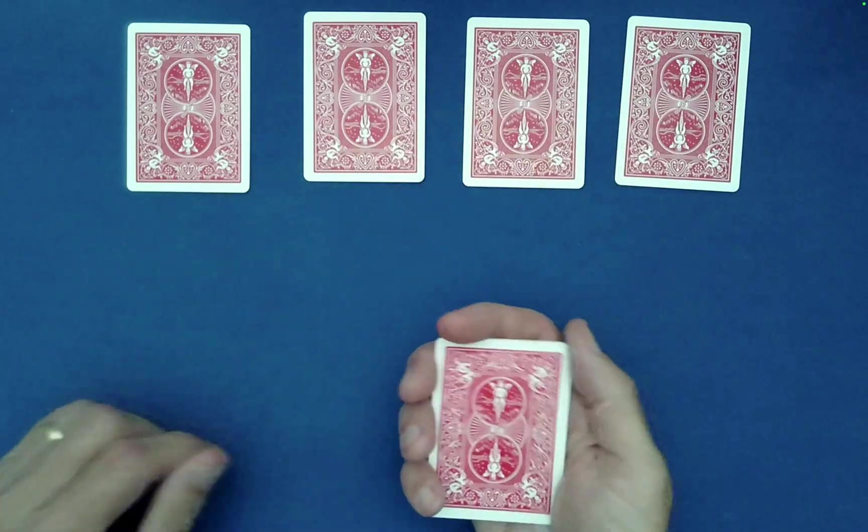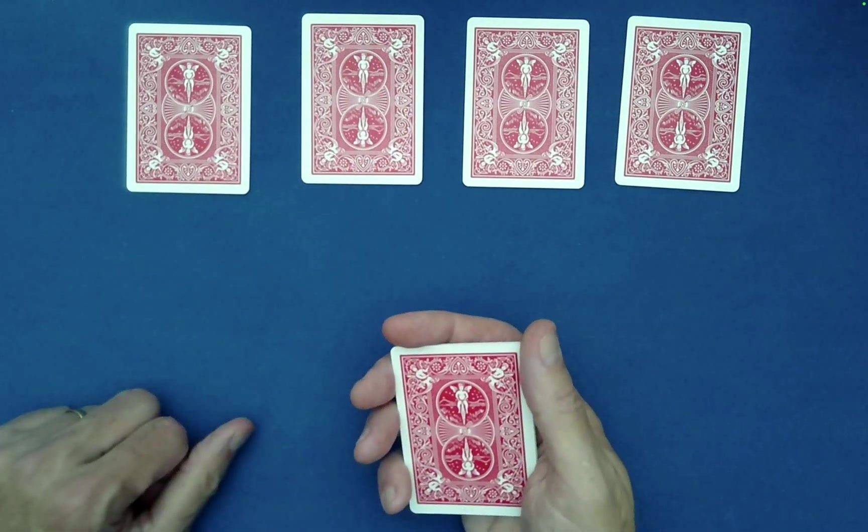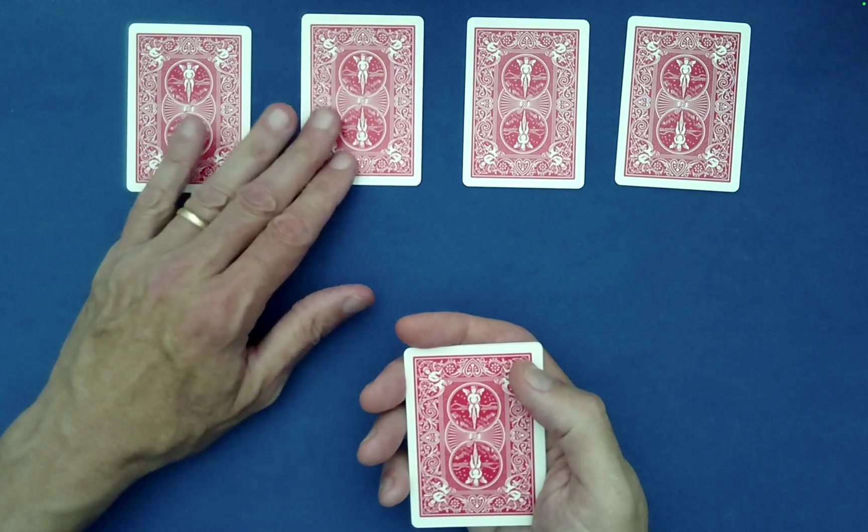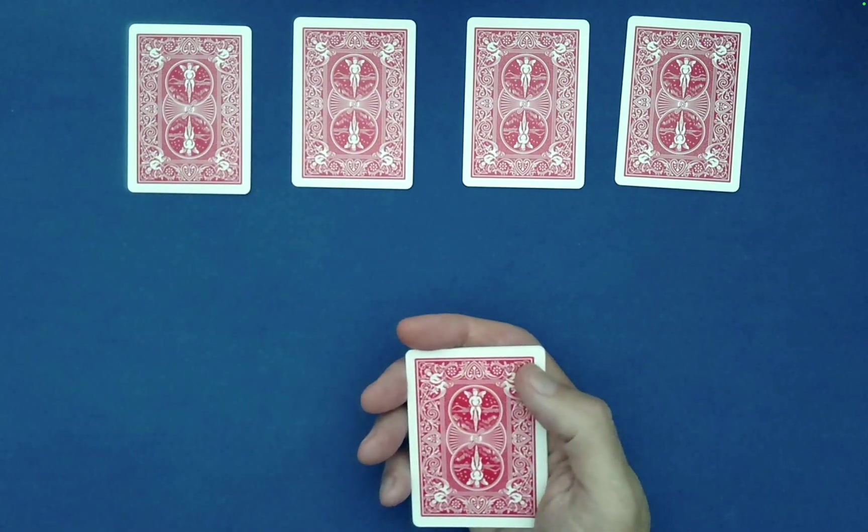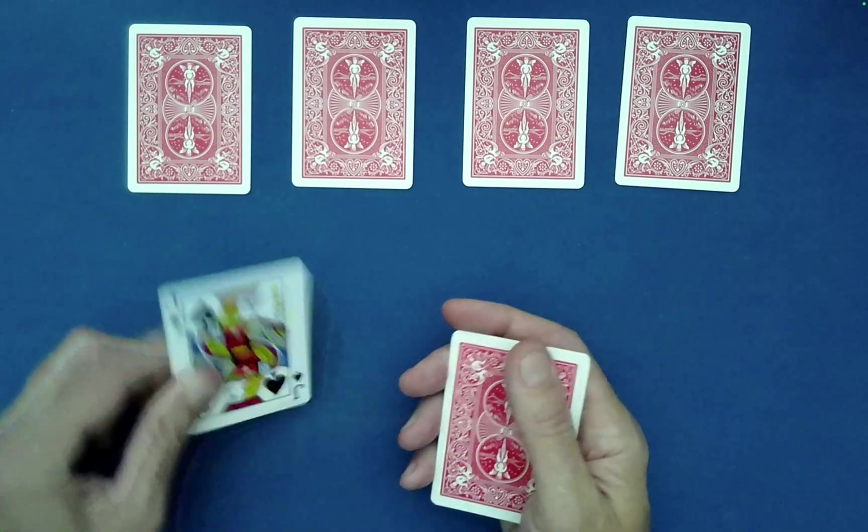Now you may have noticed the card values that I just happen to spell out, and that's for a simple reason. Do you remember what they were? Jack, Queen, King. That's for the simple reason that I have a Jack,